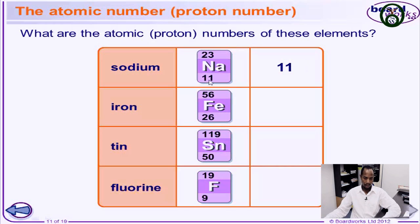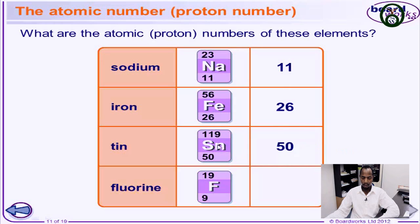For sodium, symbol Na derived from the Latin name Natrium, the atomic number is 11, because the number of protons found in the nucleus is 11. For iron, the number of protons is 26, so the atomic number of iron is 26. For tin, the atomic number is 50 because the number of protons is 50. For fluorine, symbol F, the atomic number is 9 because the number of protons found in the nucleus is 9.